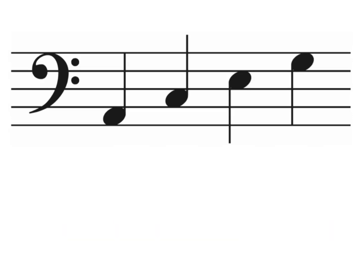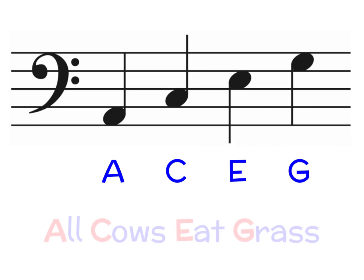The space notes of the bass clef are A, C, E, and G. To help us remember that, we can learn the phrase, all cows eat grass. Remember to count up from the bottom of the music staff, all cows eat grass. A, C, E, G.